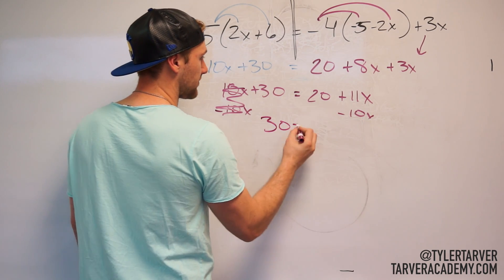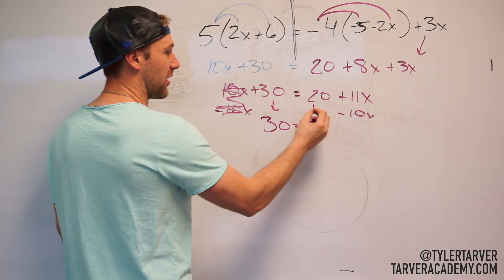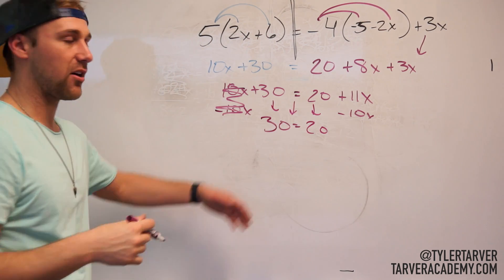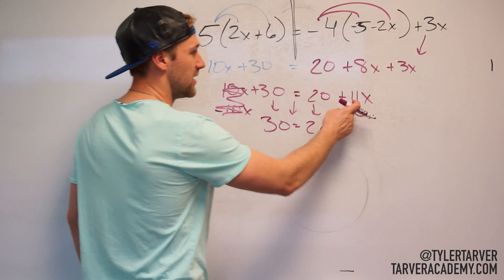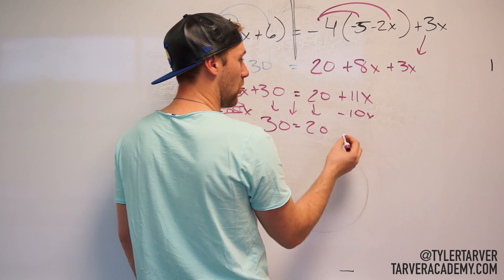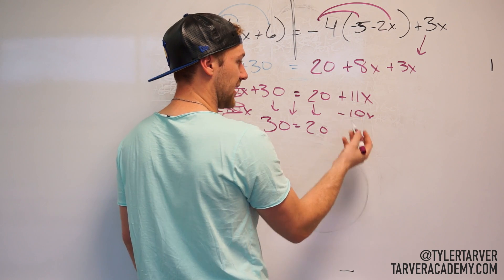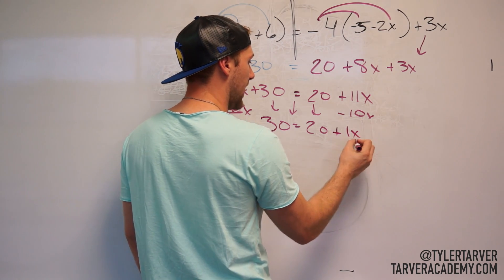So 30, bring down the 20. Please don't forget to bring down your stuff. Everybody might just get in a hurry and then they start having random numbers like they're choosing something from Wheel of Fortune. 11x minus 10x is 1x. And it's a positive 1x. So 11 minus 10 is 1. So plus 1x.